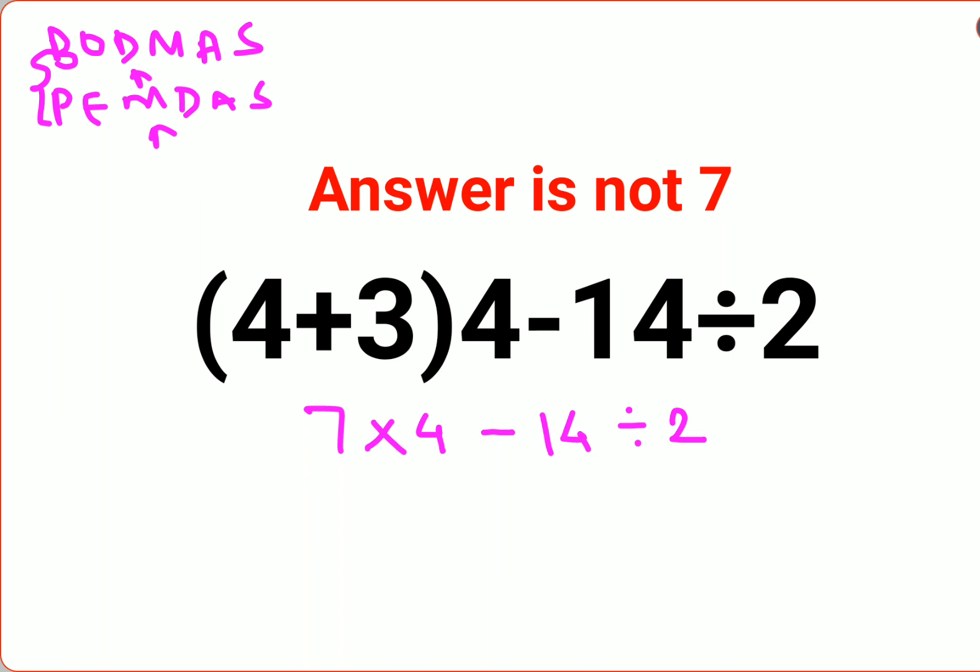The first very important thing to remember is you always have to go from left to right, because in case of division and multiplication, you have to remember that it has to be done from left to right. So we have 7 into 4, that gets you 28.